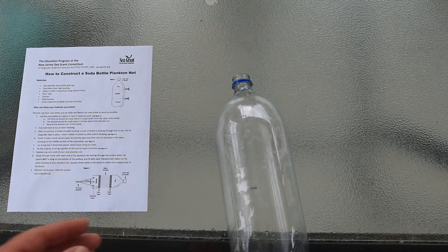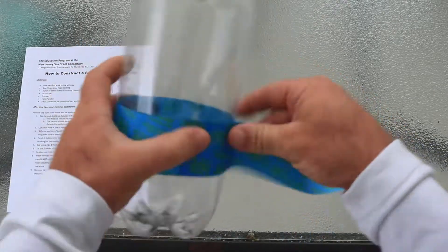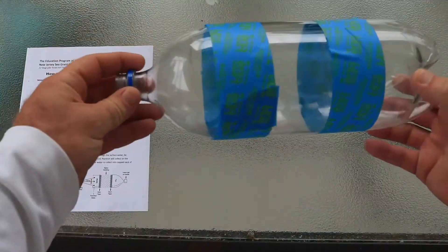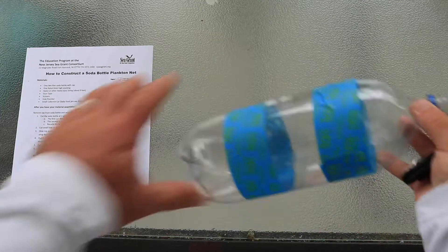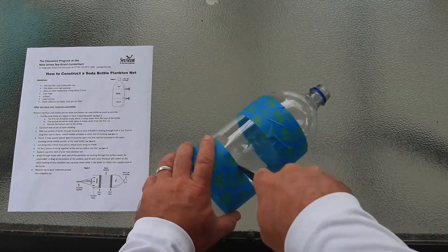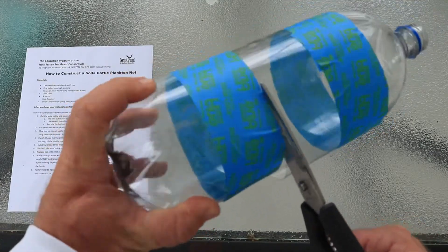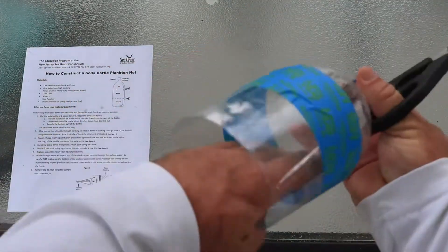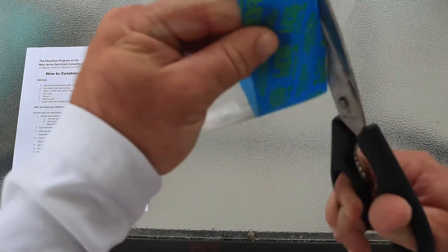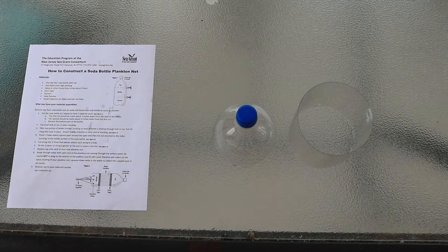I'm going to use a little painter's tape to attempt to cut in a straight line. That's straight-ish. There we go. Now, we don't need the bottom. I'm going to go ahead and set that to the side.